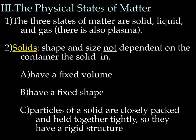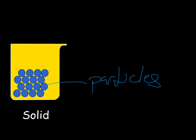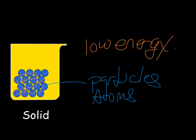The particles — atoms and molecules — that make up a solid are closely packed together and held tightly, so they have a very rigid structure. These particles are all hooked together nice and tight. All atoms and particles move, but since these are all hooked together, they can only vibrate — they can't do much more than vibrate. So we say that they have low energy.